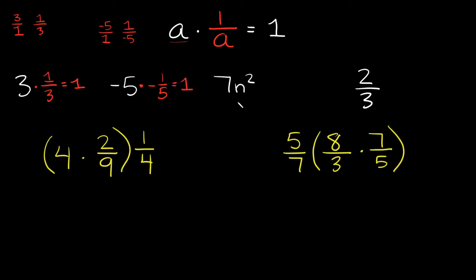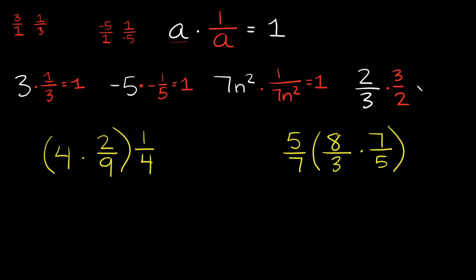It works the exact same way with variables. For 7n squared, the reciprocal would be 1 over 7n squared — multiply them together and your answer is 1. And for 2 over 3, it's already a fraction, so the reciprocal is just 3 over 2. You flip it, and multiplying by the reciprocal gives you 1.